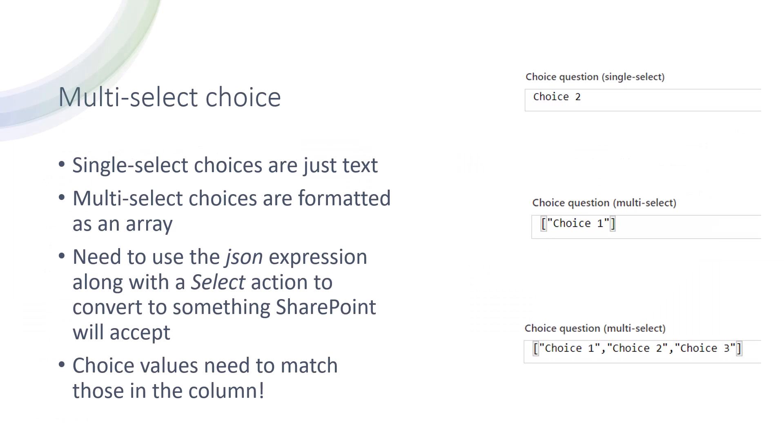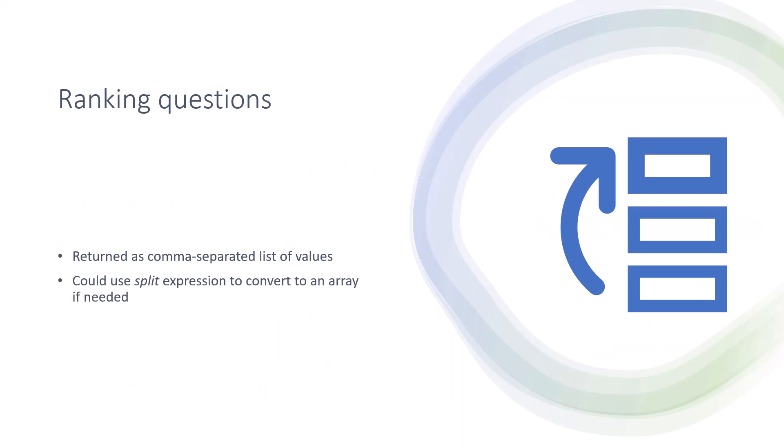That covers multi-select choice columns — probably the most common of these complex types you'll encounter. For ranking questions, I haven't personally used them in a SharePoint-connected form, but there may be use cases. The key thing to know is what type of data comes back.